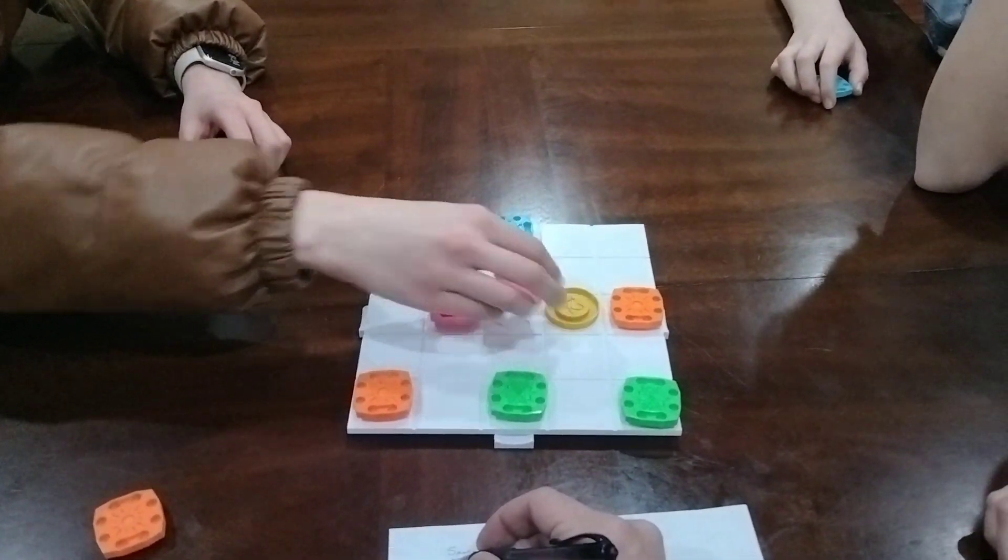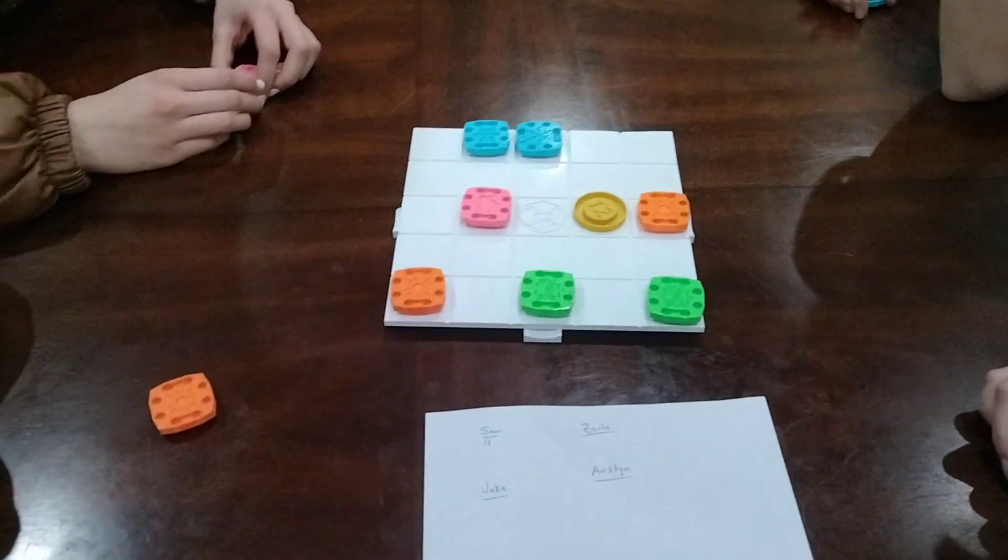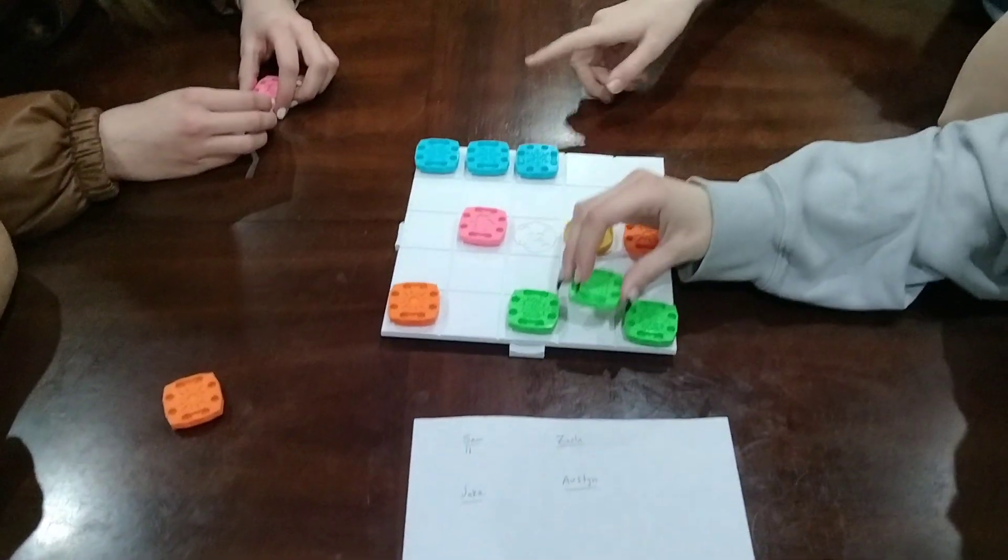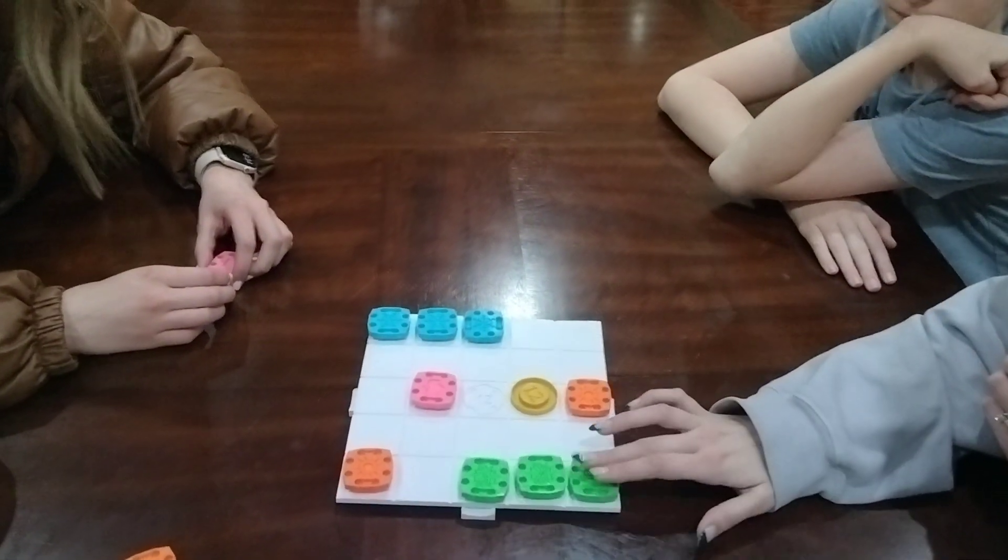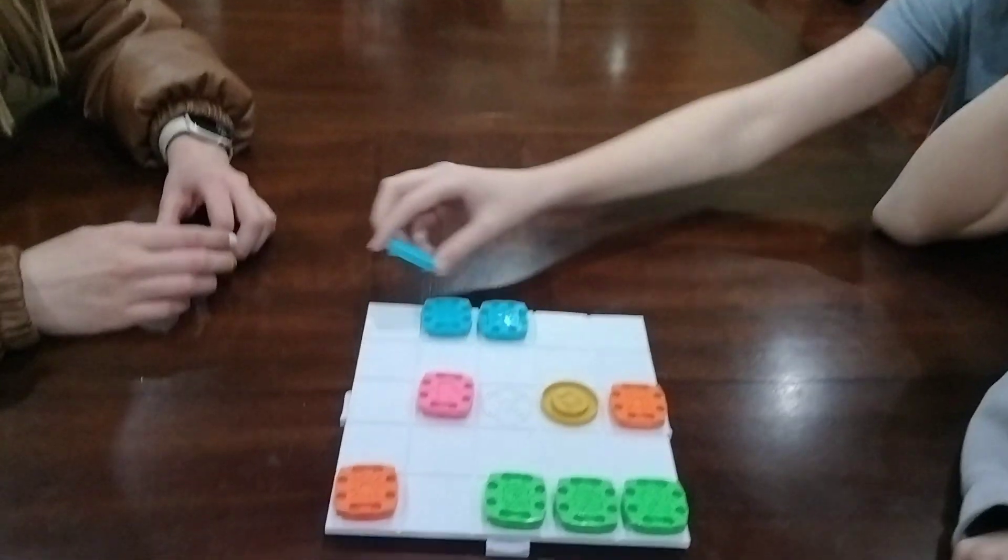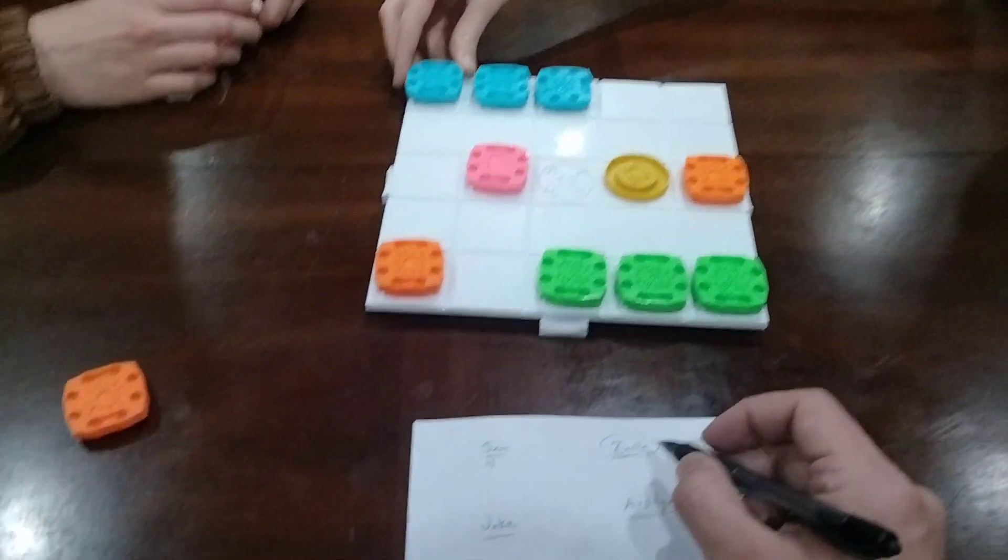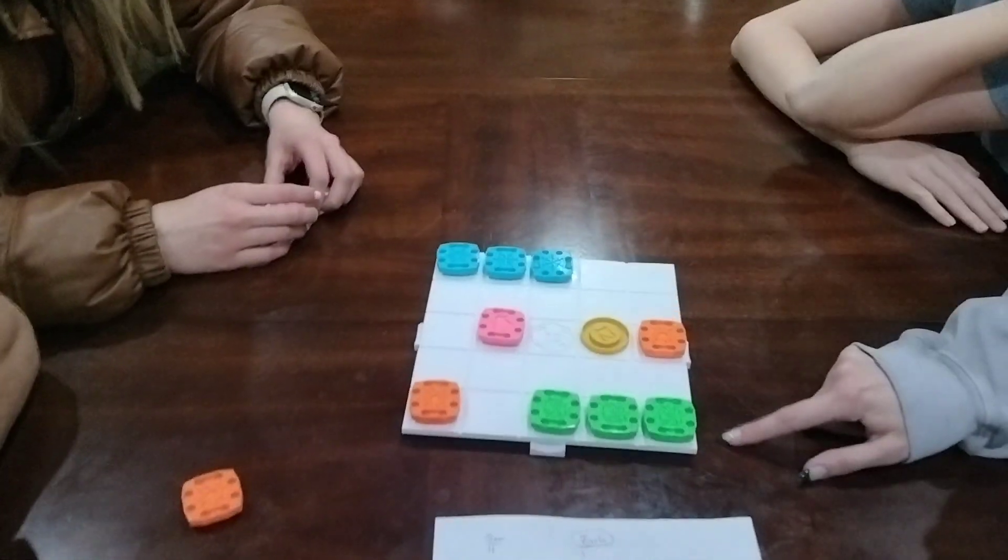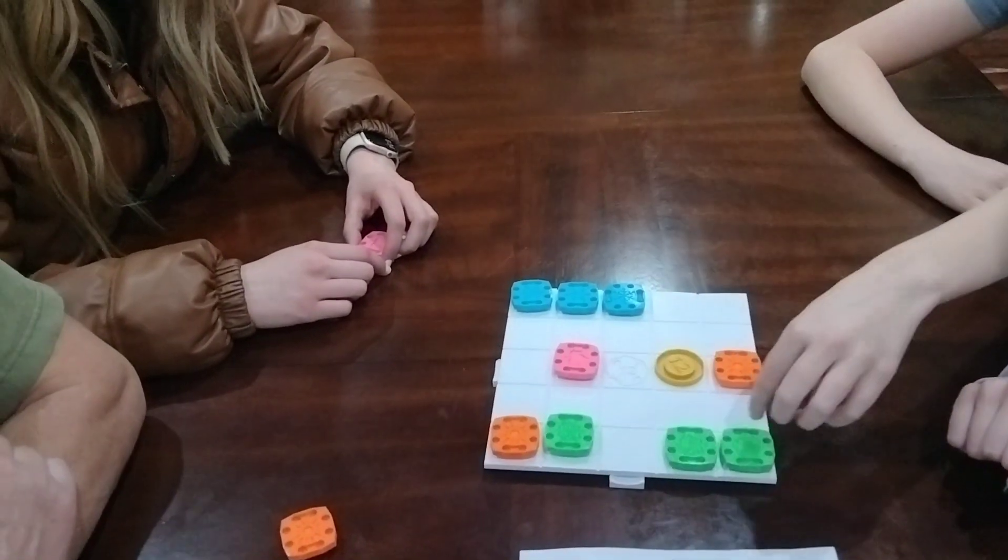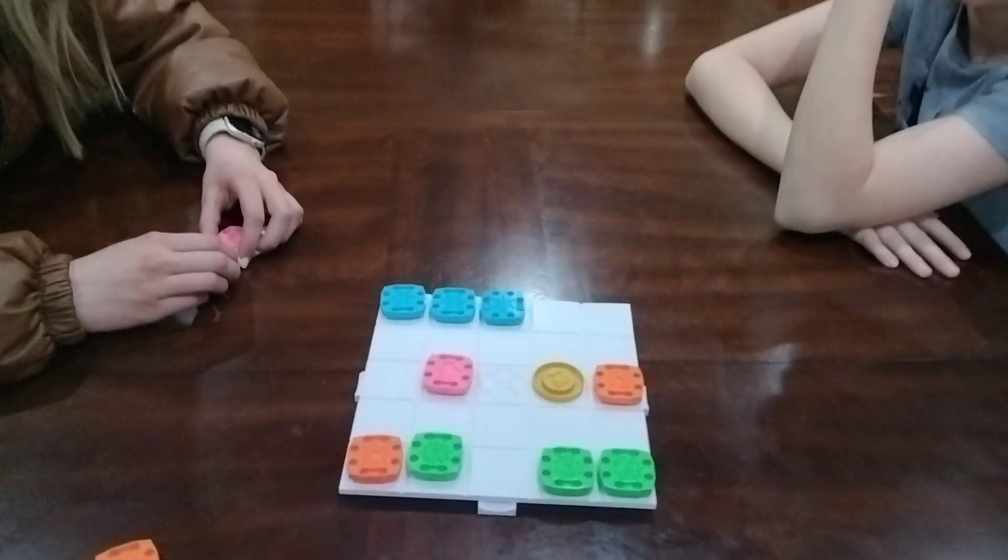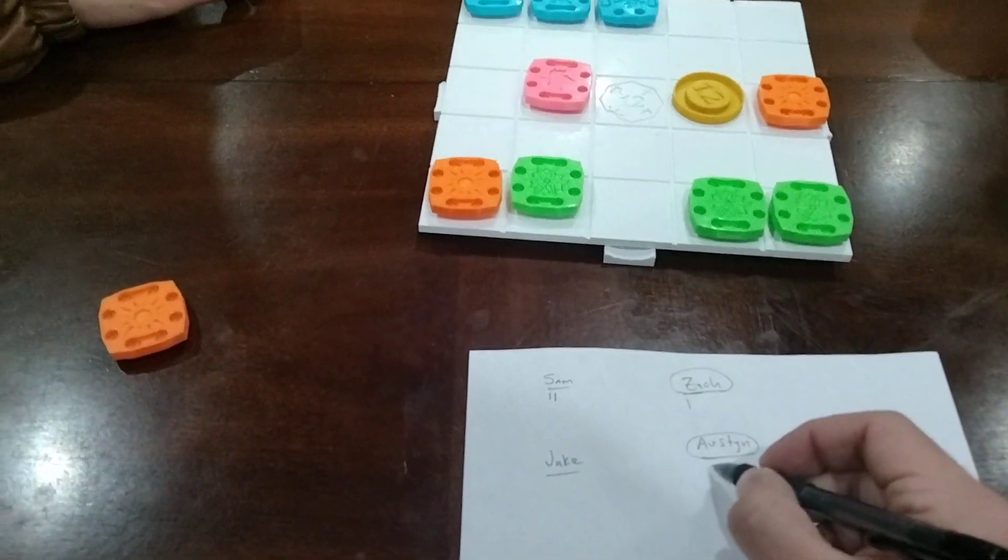So Sam's at two points. And your pieces move, yeah, so it pushes your pieces. So Zach just got three in a row, so we'll circle his name and give him a point. And I got three in a row. You gotta move this one up and then this one doesn't move. But you did get three in a row as well.